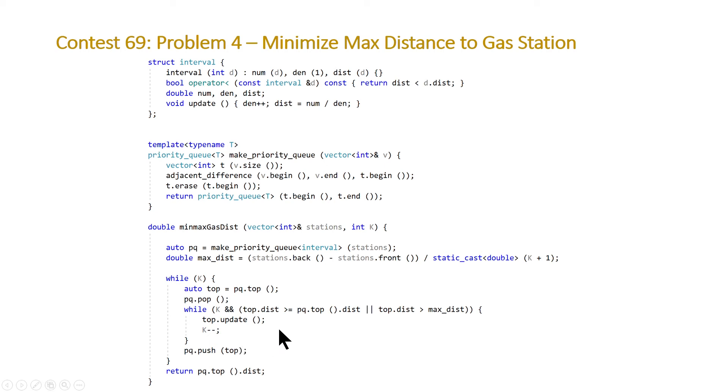And once that interval no longer has the maximum distance, we're going to stop our loop, push it back in to the priority queue, and then repeat this while loop, so it'll get the next interval and continue. And if we do that until we exhaust the number of gas stations that we have to add, we'll end up with our answer.